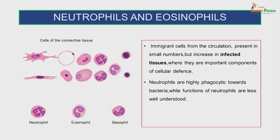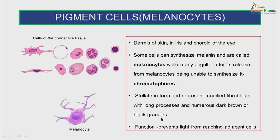The neutrophils and eosinophils are immigrant cells from the circulation. They are present in small numbers but increase in infected tissues where they are important components of the cellular defense. The neutrophils are highly phagocytic towards bacteria, while the functions of eosinophil cells are less well understood. The pigment cells, also called melanocytes, are found in the dermis of skin, in the iris and choroid of the eye. Some cells can synthesize melanin and are called melanocytes, while many engulf it after its release from the melanocytes, being unable to synthesize it.